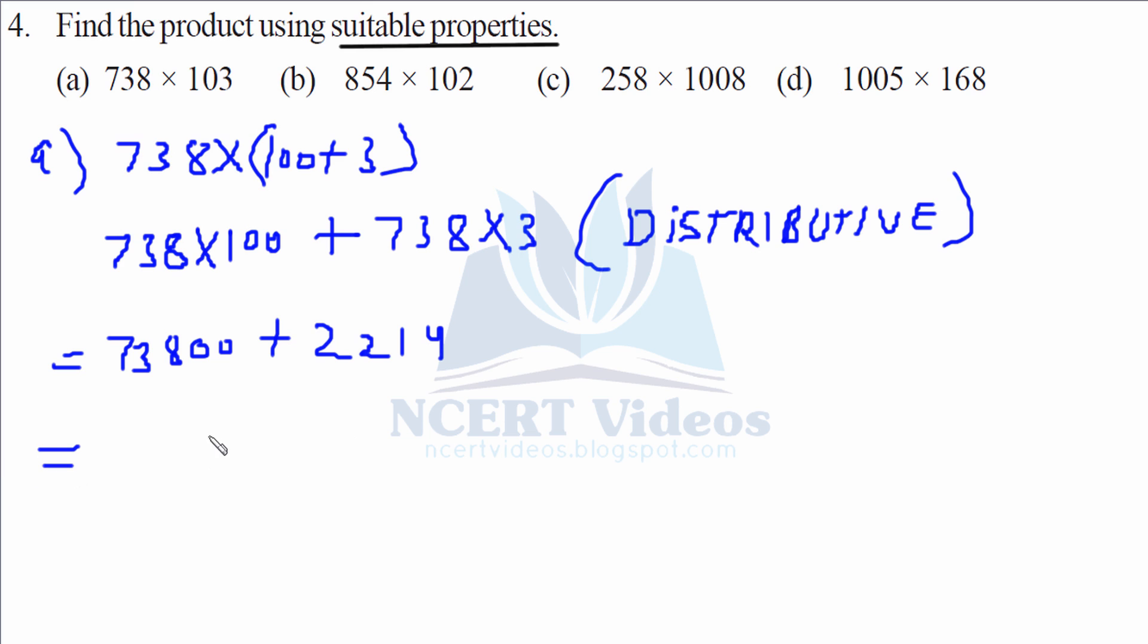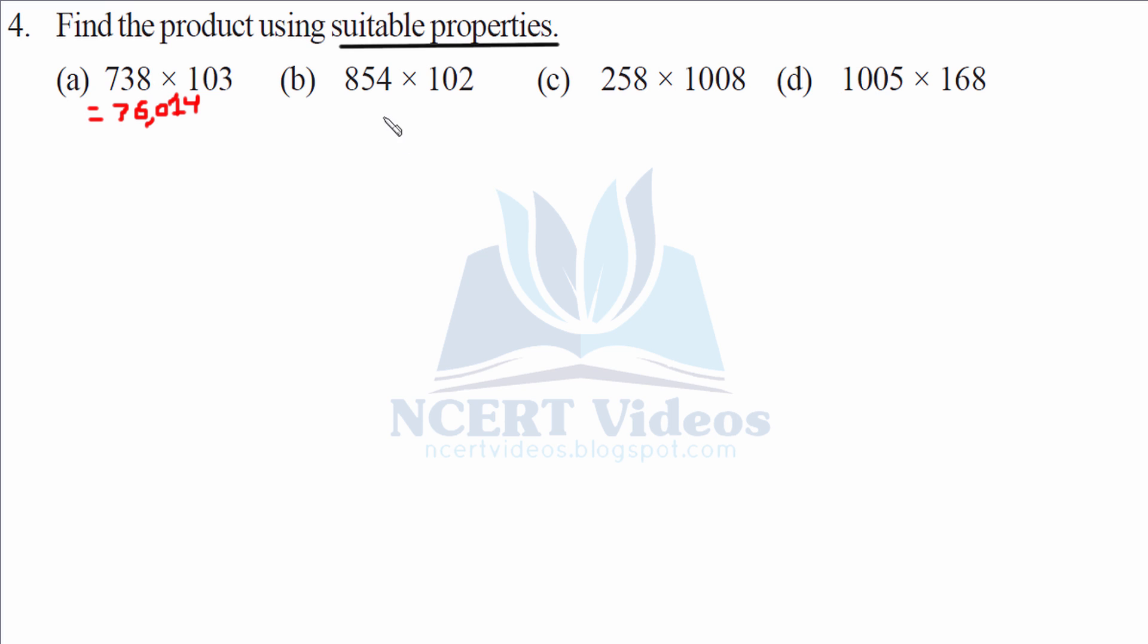Adding them up, a simple task. You've been doing it from past few exercises. So it is 76014. Now part b. Again, how we come to conclusion which number we have to split is that the number which is very easier, which appears to you as easier. Look, 854 cannot be split. But we can split 102 as 100 plus 2. The rest of the procedure remains same. We are directly applying distributive property. That is first multiplying 854 with 100. So it turns out to be 87108.